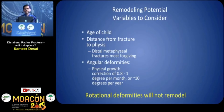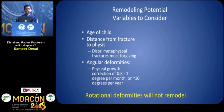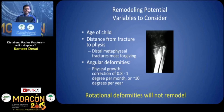What is the remodeling potential and what variables must you consider? Younger the child, the better the remodeling potential. Distance of fracture to the physis matters — metaphyseal fractures are the most forgiving. Angular deformities correct at 0.8 to 1 degree per month with physeal growth. What you should remember is that rotational deformities will not remodel.